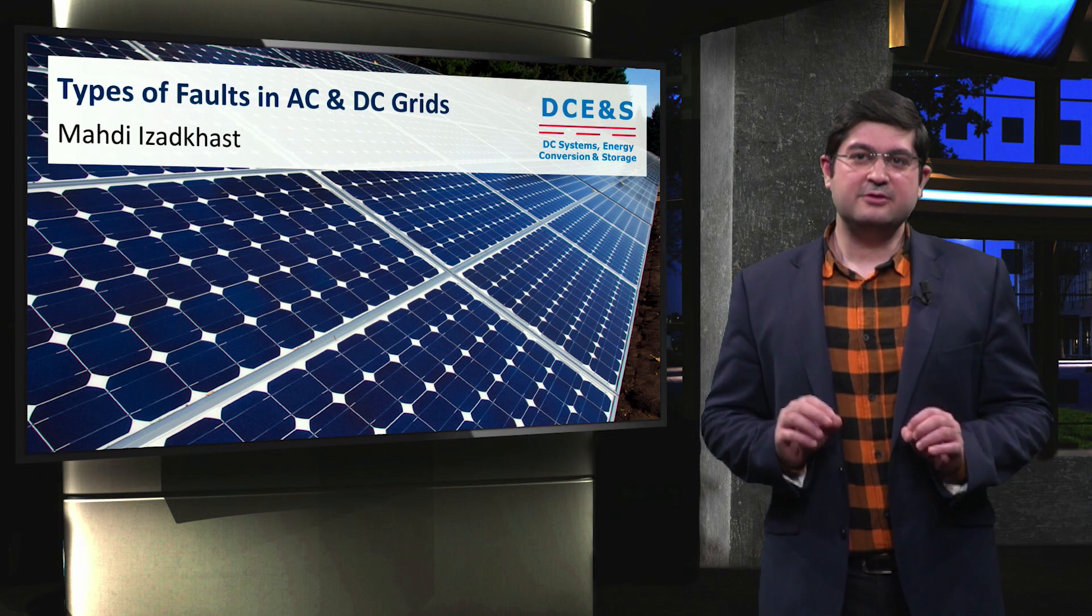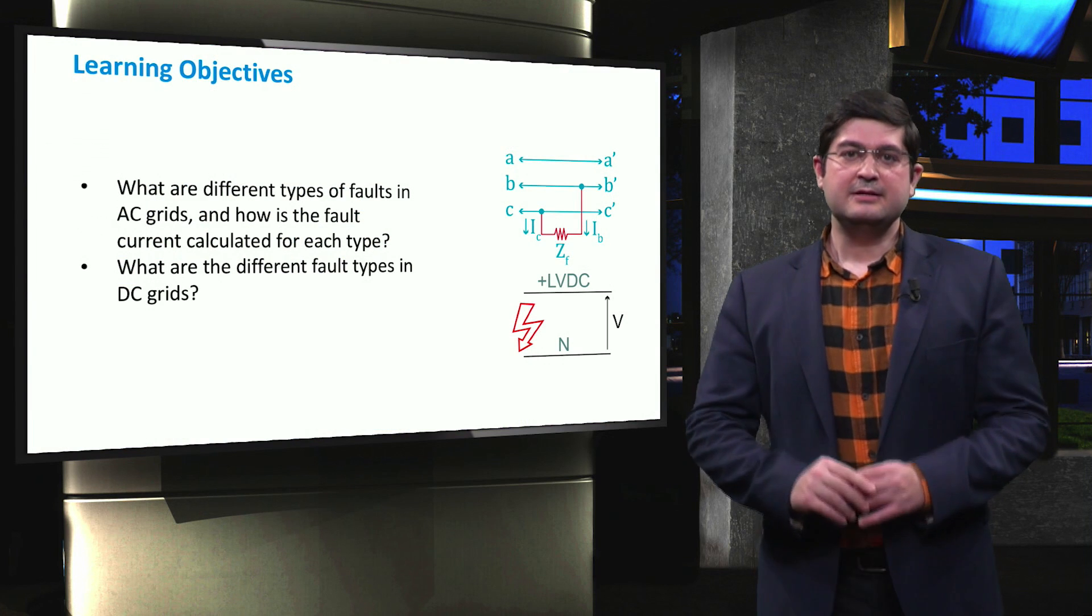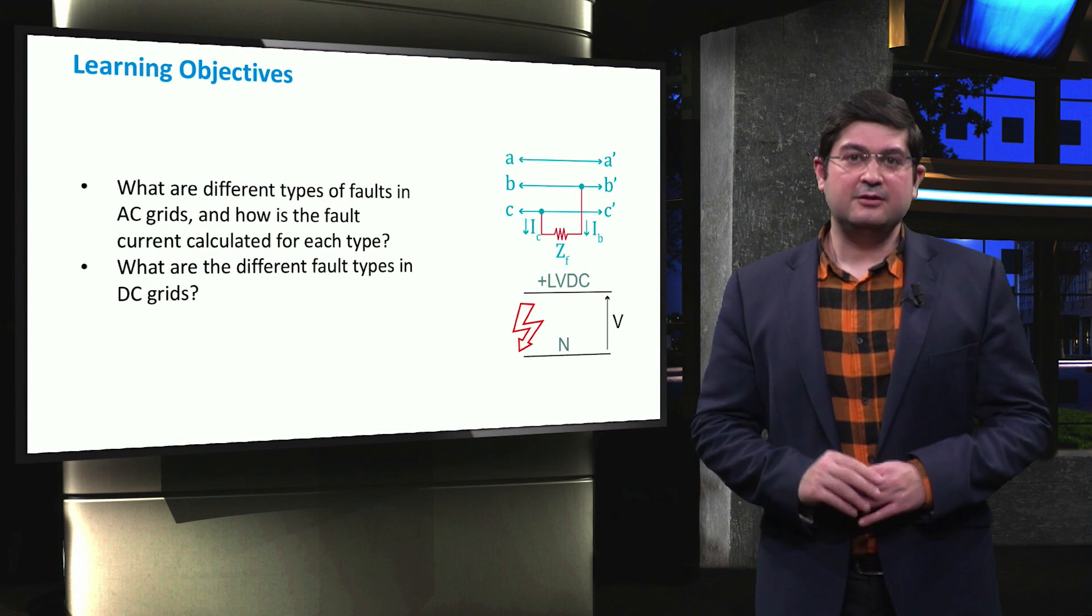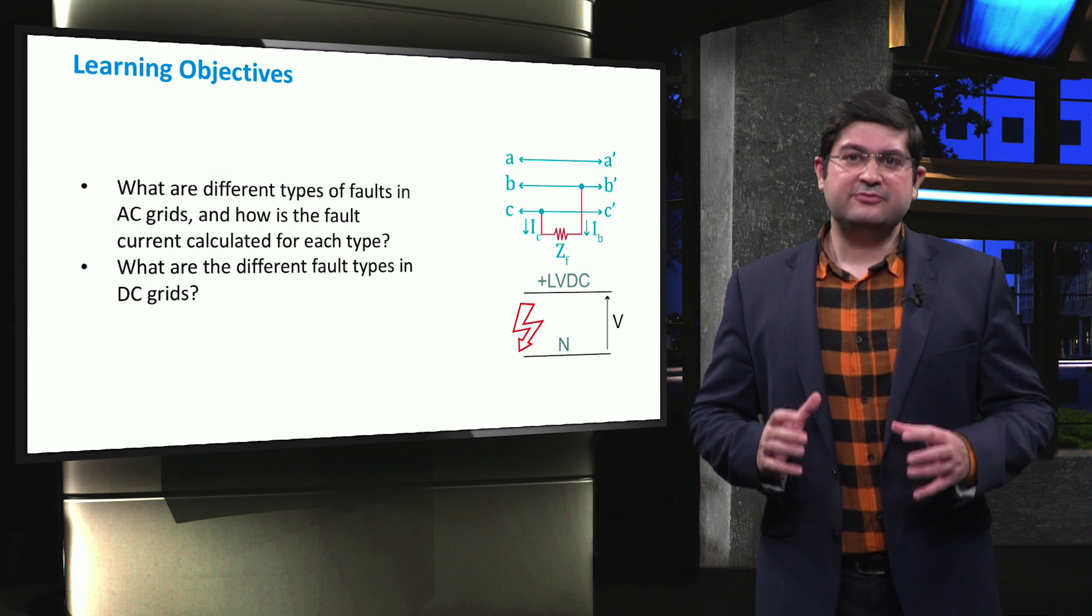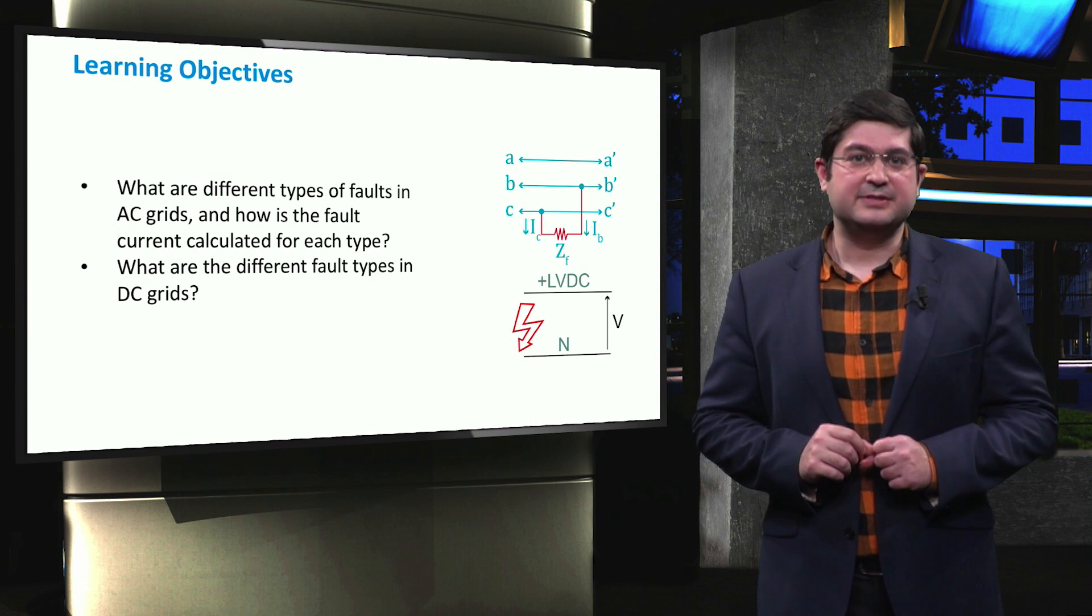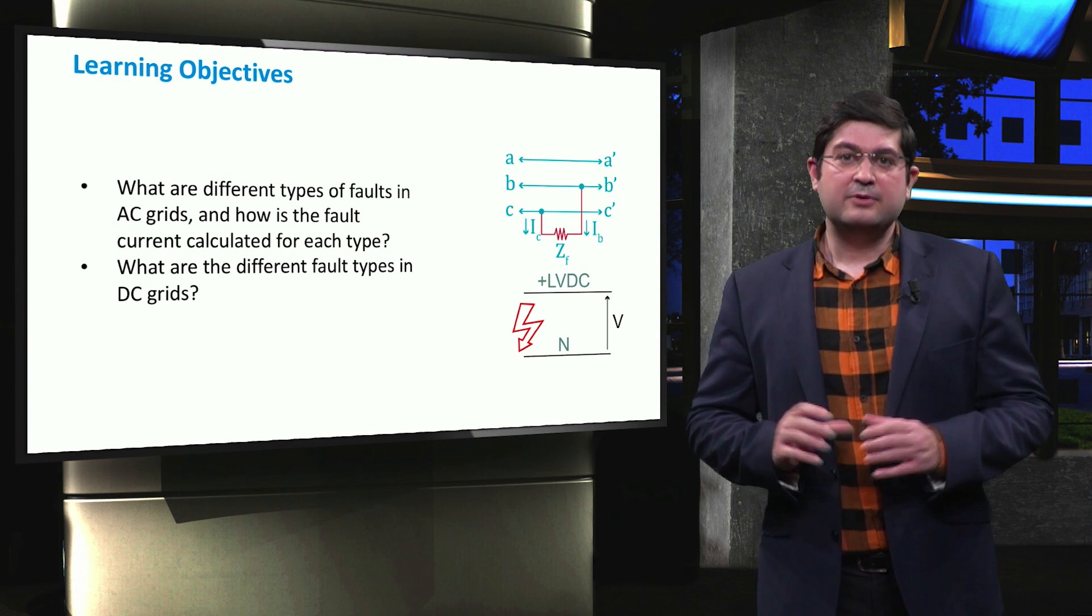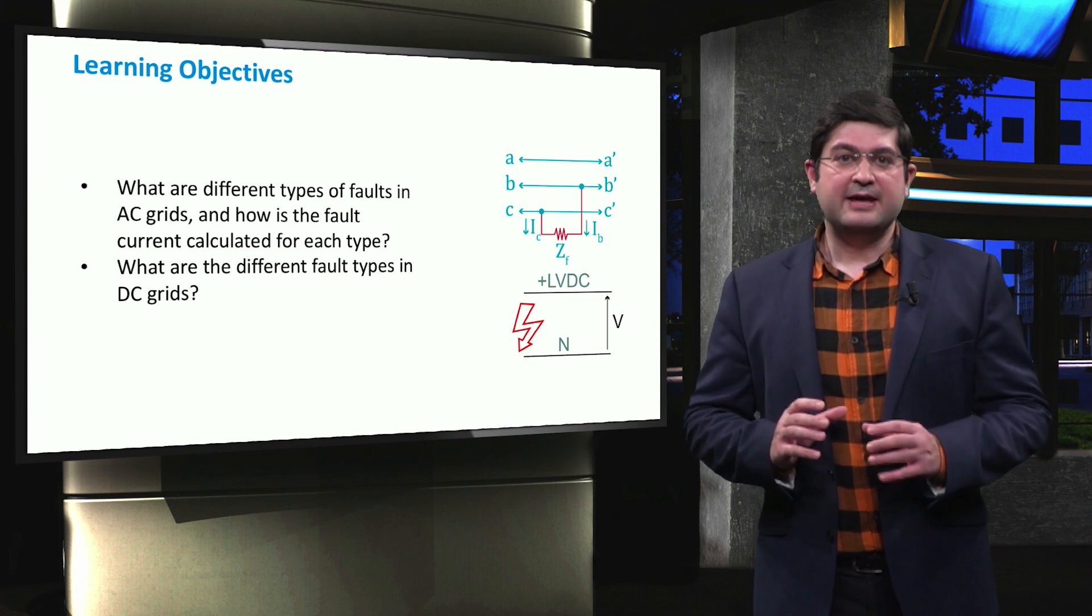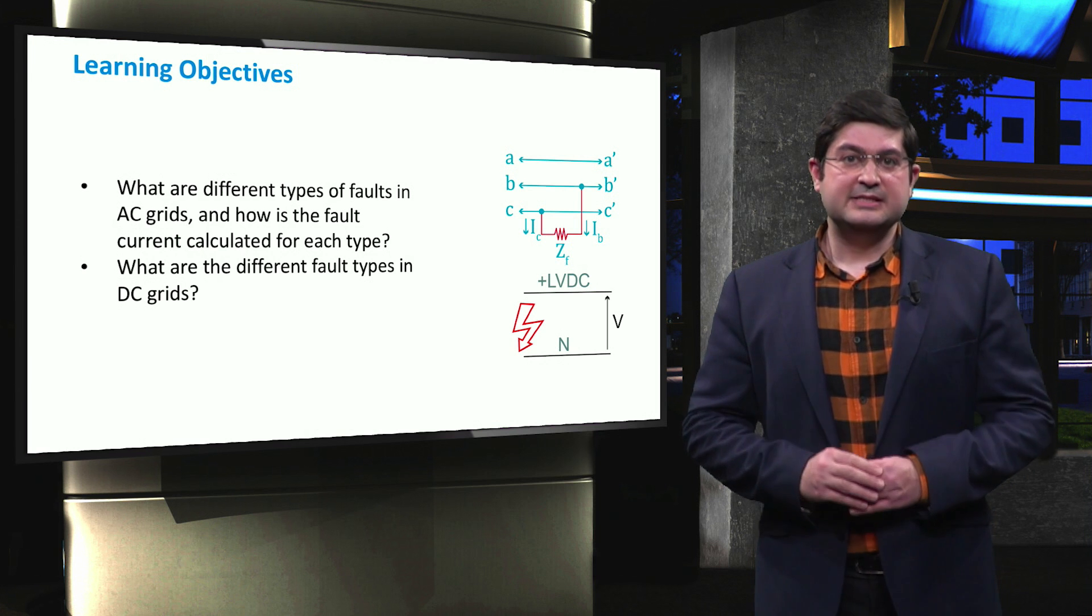In this video, we review different types of faults in AC and DC grids. The main learning objectives fall under three main questions. Firstly, what are the different types of faults in AC grids? Secondly, how is the fault current calculated for each type in the AC system? Thirdly, what are the different fault types in DC grids?